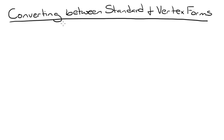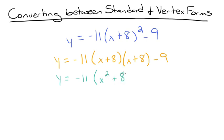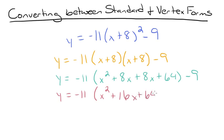Let's try one more example: convert y equals negative 11 times x plus 8 squared minus 9 to standard form. Start by expanding the squared binomial: y equals negative 11 times x plus 8 times x plus 8 minus 9. FOIL gives y equals negative 11 times x squared plus 8x plus 8x plus 64 minus 9. Combining like terms gives y equals negative 11 times x squared plus 16x plus 64 minus 9.